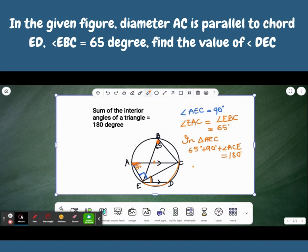So, using the angle sum property, I can get angle AEC as, we can calculate it from this equation. 180 minus, you add these two and subtract. 65 plus 90,